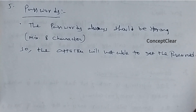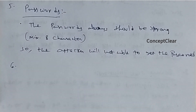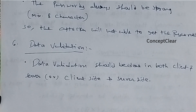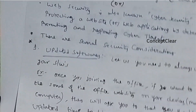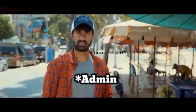The sixth consideration is data validation. The shared or existing data should be correct. Whether the data you are sharing is exactly correct or not will be validated by both the client side and server side. Only when both accept it is it considered valid data. These are the six web security considerations. If you have any doubts, please ask in the comment section. Thank you.